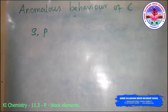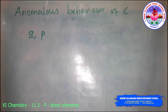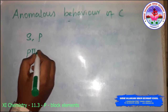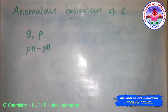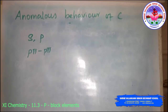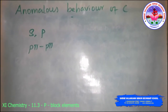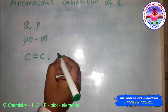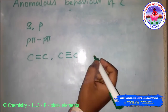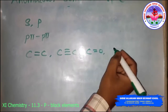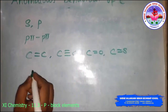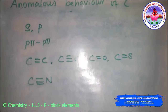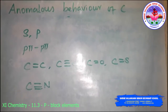Carbon has a unique ability to form p-pi to p-pi multiple bonds with itself and with other atoms of small size and high electronegativity. Examples include C=C, C≡C, C=O, C=S, and C≡N bonds. Heavier elements do not form p-pi to p-pi bonds because their atomic orbitals are too large and diffuse for effective overlapping.